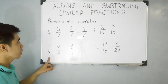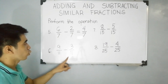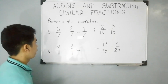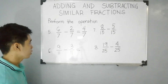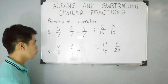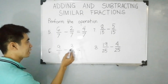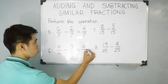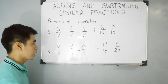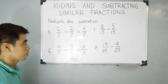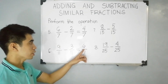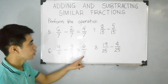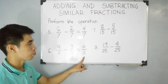For item number 6: 9 over 11 minus 3 over 11. As you can see, they have the same denominators also. Therefore, just subtract 9 and 3. 9 minus 3 is 6. Copy the denominator — 6 over 11. 6 and 11 do not have any common factor aside from 1. Therefore, 6 over 11 is in simplest form.